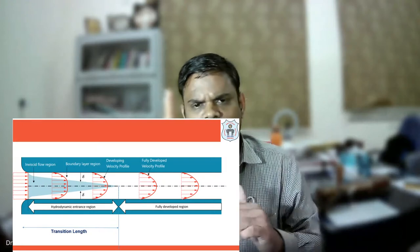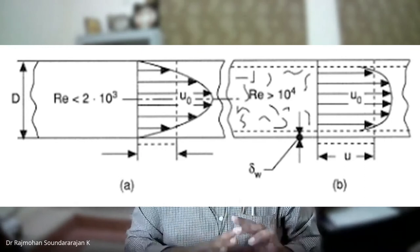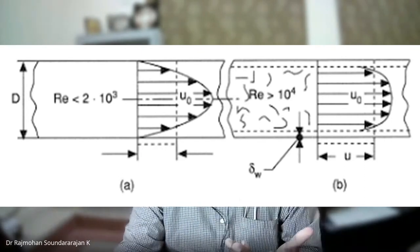For a laminar flow, we have a parabolic velocity profile. For a turbulent flow, we have a flat velocity profile with velocity changing from 0 to 99% near the boundaries alone. Based on the Reynolds number, we classify fluid flow into laminar and turbulent flow.